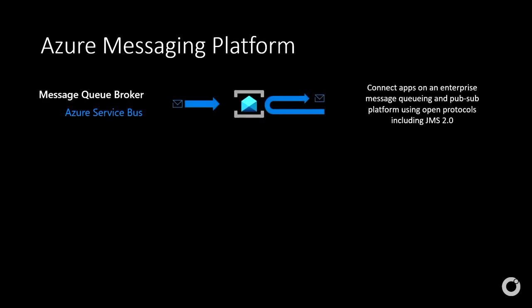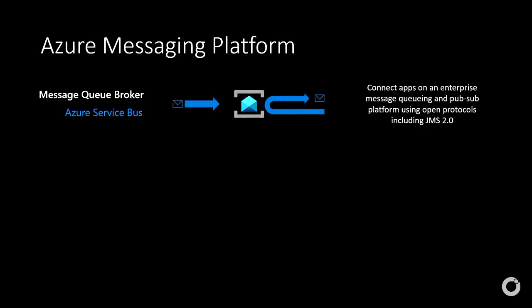Azure Service Bus is part of the broader Azure messaging platform. With receive-and-delete mode, you receive the message, it's gone from our side, and if anything happens you have to handle it yourself. With peek-lock mode, you take a lock on the message, we keep it in the queue, you process it, then complete it to remove it — or abandon it to make it available for the next consumer. Service Bus is not the right choice for all scenarios though.